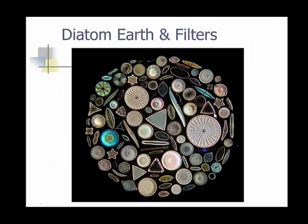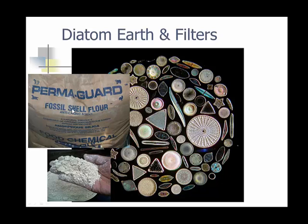Diatom earthen filters — here's a larger picture of diatoms. You can see they almost all have holes in them, which allows us to make fossil shell flour, an anti-caking agent, which is amorphous — made of different types of shapes and sizes — silicon, and it's actually food chemical grade. Here's a picture of a guy holding some of this material. You can mix this in with bread or take it as a supplement in the morning, and it's supposed to do all kinds of wonderful things.